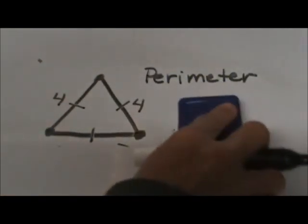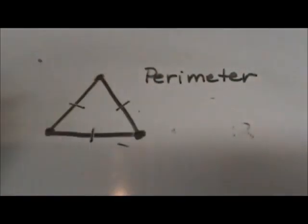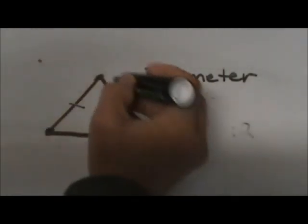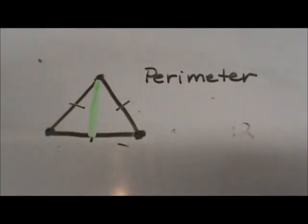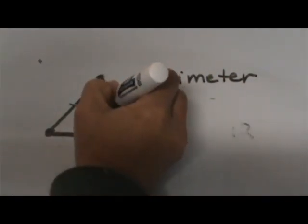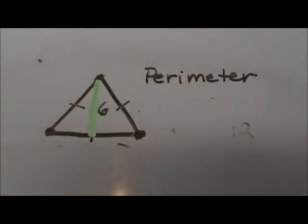Let's say that we are not given the side. Let's say we're given the height. Let me draw that in. So here's the height of an equilateral triangle. I'm drawing that in green and let's say that it is 6 and we have to find the perimeter.